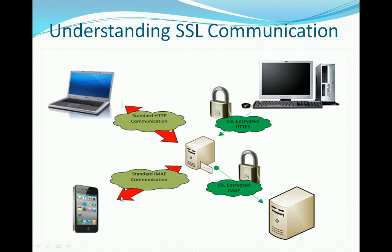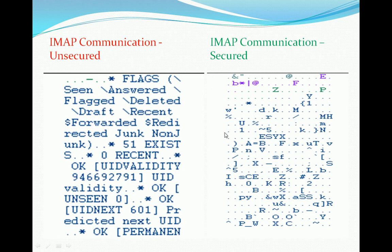Let's see what that communication looks like if someone were to packet sniff it. On the left, you'll see IMAP communication unsecured. I didn't put the real passwords here, but this shows what can be seen if you were to packet sniff a full IMAP, SMTP, or HTTP communication — you could see the full login credentials. Now, if it's secured and going over SSL, as you can see on the right, you won't be able to decrypt anything. These are the exact same packets from the same packet sniff — one showing standard, one showing secured.